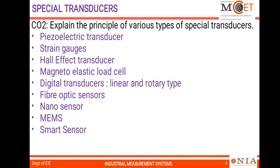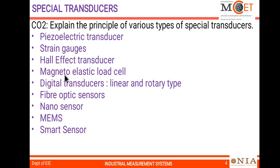CO2 deals with special transducers. Topics covered include piezoelectric transducers, strain gauges, Hall effect transducers, magneto-elastic load cells, digital transducers — particularly linear and rotary type encoders — fiber optic sensors, nano sensors, MEMS, and smart sensors. These special transducers are applicable for the measurement of physical quantities in industries.